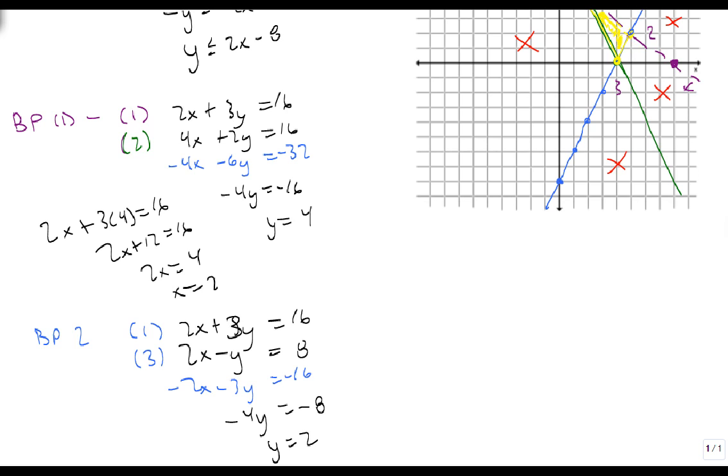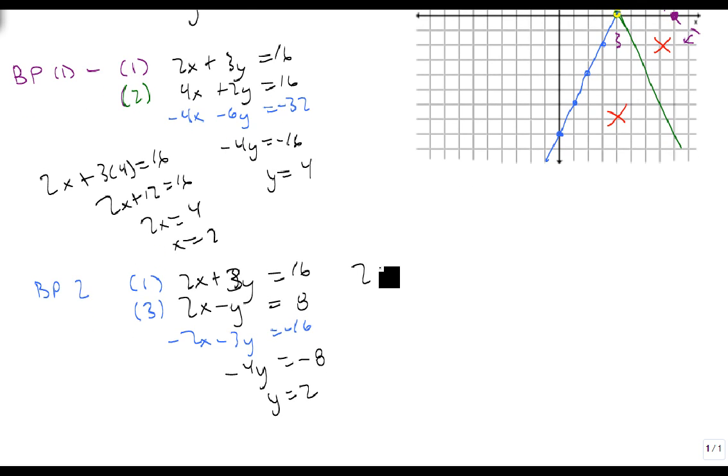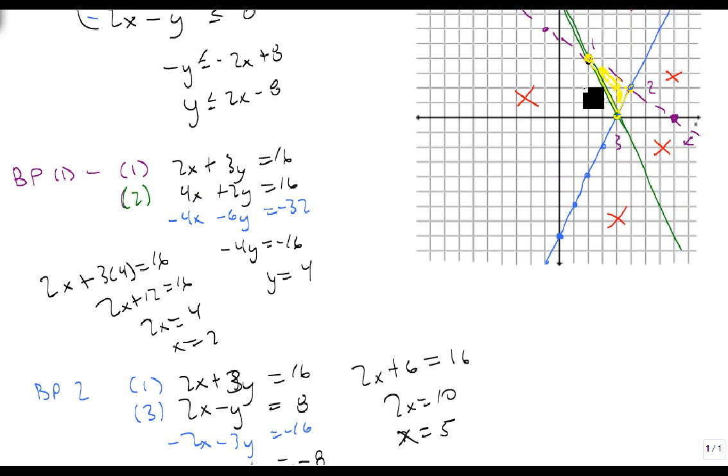Again, that's what we were expecting. And when y is 2, we get 2x plus 6 equals 16. 2x equals 10. x equals 5. And again, that's what we were expecting. So that point's now correct.